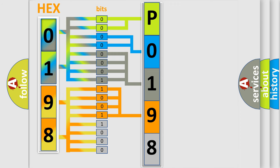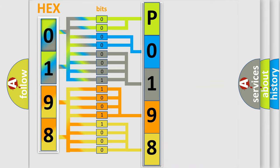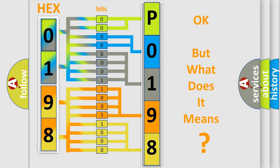A single byte conceals 256 possible combinations. We now know in what way the diagnostic tool translates the received information into a more comprehensible format. The number itself does not make sense to us if we cannot assign information about what it actually expresses.